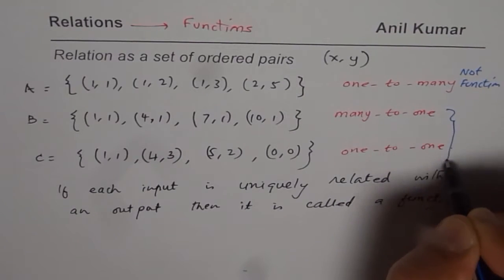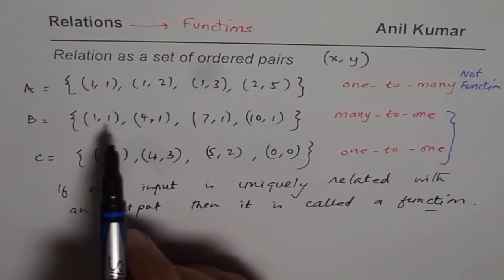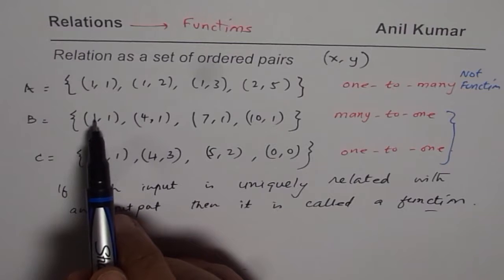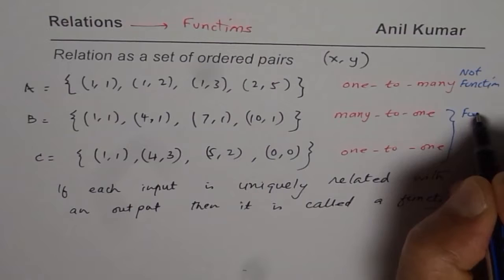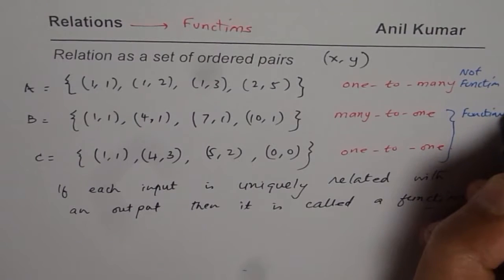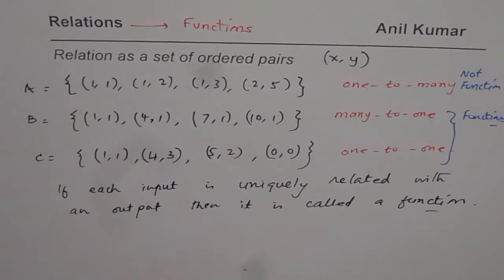The other two: in relation B, 1 is related with 1, and 4 is related with 1. Each element is related with exactly one element in the output, so these are functions. Relations in which the relationship is many-to-1 or 1-to-1 will be a function; the others won't be.